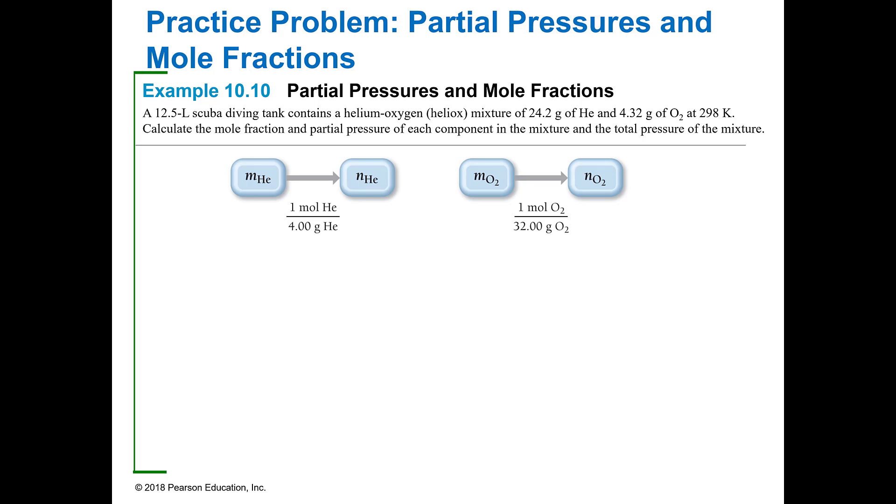So in a 12.5 liter scuba tank, it contains a heliox mixture which is helium and oxygen. You have 24.2 grams of helium and 4.32 grams of oxygen, and the temperature is 298 Kelvin.